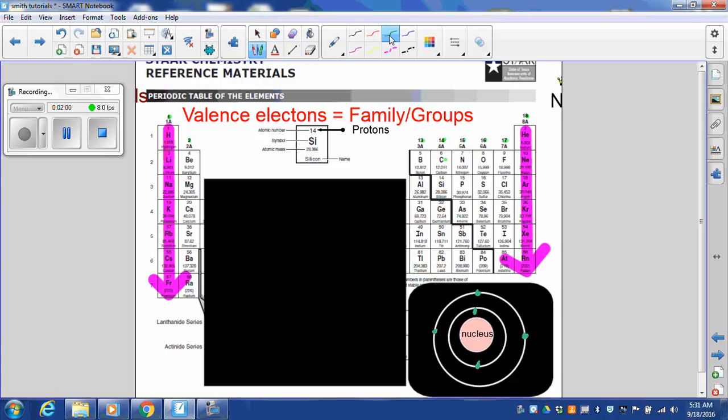But now let's add an electron. It has to go on that outer shell. So now it has 4 valence electrons. That now puts it in family group 14.